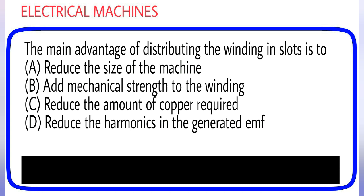The main advantage of distributing the winding in slots is to: (A) Reduce the size of the machine, (B) Add mechanical strength to the winding, (C) Reduce the amount of copper required, (D) Reduce the harmonics in the generated EMF. Answer is option D.